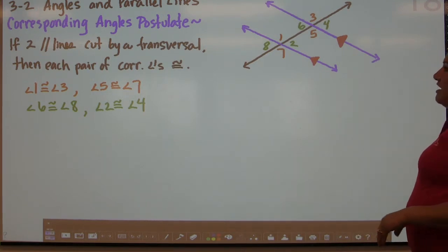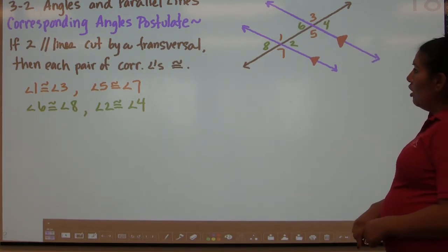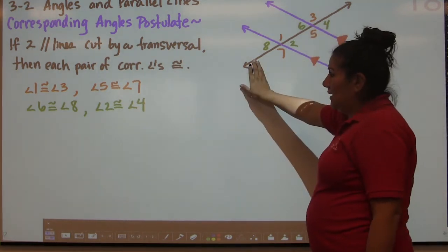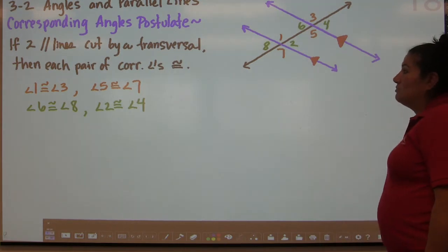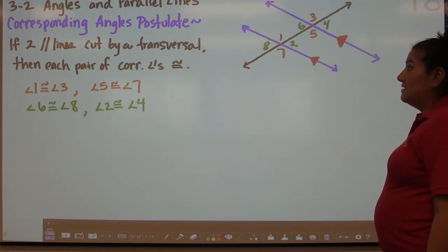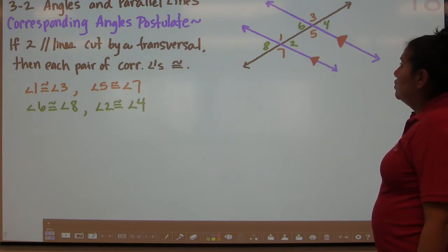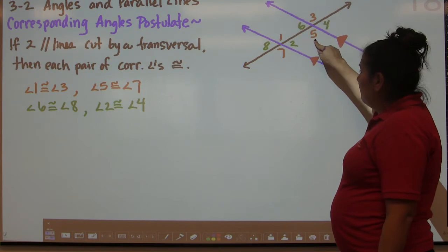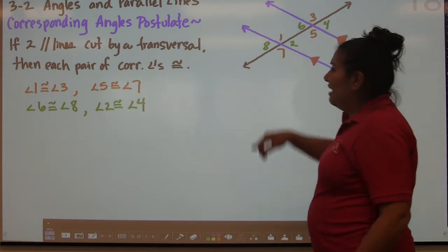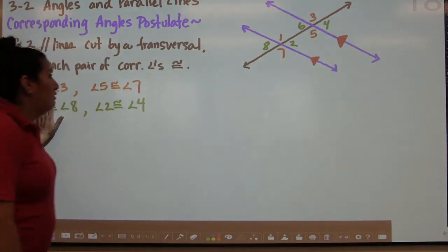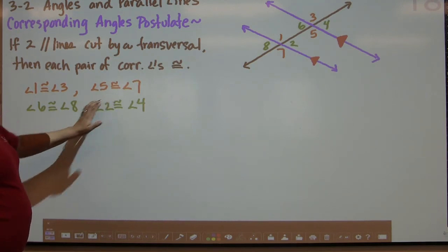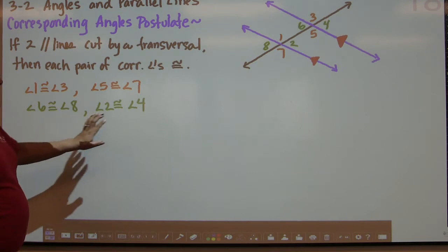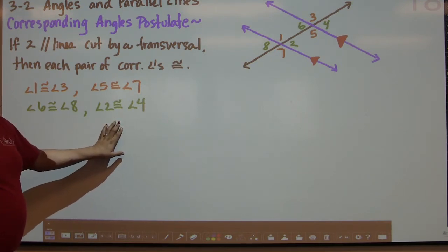The corresponding angles postulate states that if two lines are parallel and they're cut by a transversal, then each pair of corresponding angles is congruent. We learned in the last section what corresponding angles were, and we have them here color-coded. Angle 1 and angle 3 are corresponding angles. Angle 7 and angle 5 are corresponding angles. So angle 1 is congruent to angle 3, and angle 5 is congruent to angle 7. Also, angles 6 and 8 are congruent, and angles 2 and 4 are congruent because they're corresponding angles.